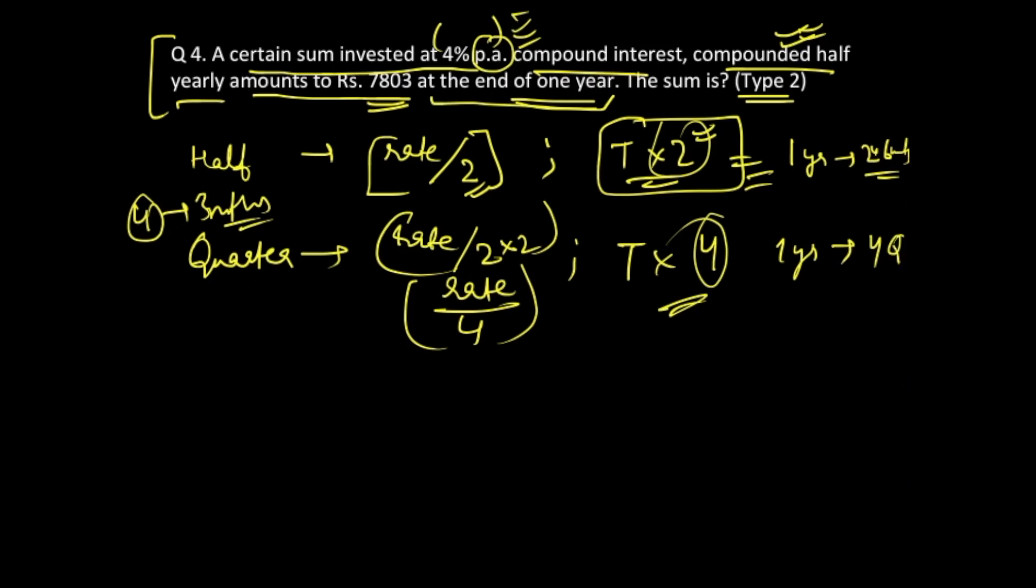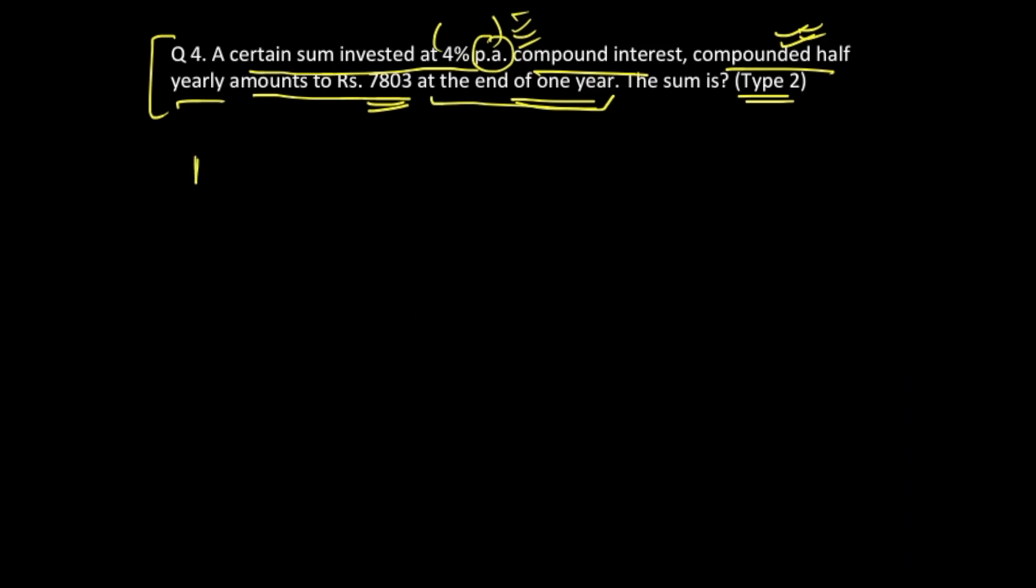Same concept—one year has four quarters, that's it. So in the given question we have been given that rate of interest is 4% per annum, time is given as one year, and the final amount that has been generated is 7803. Now we are using it for half-yearly process, so the new rate becomes 4 by 2, that is 2%.